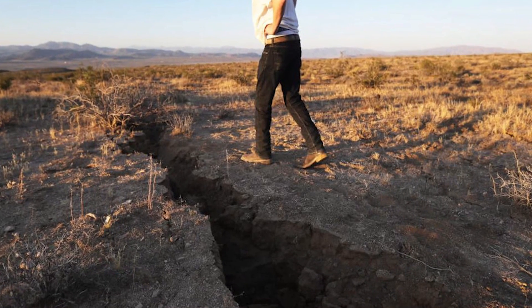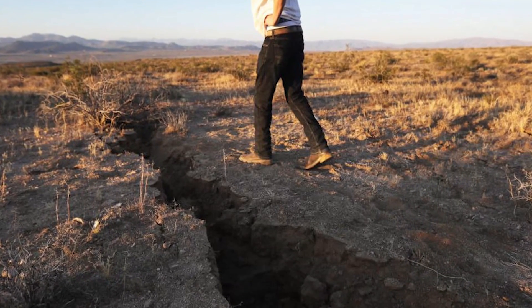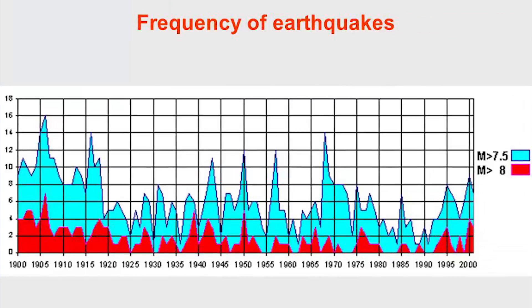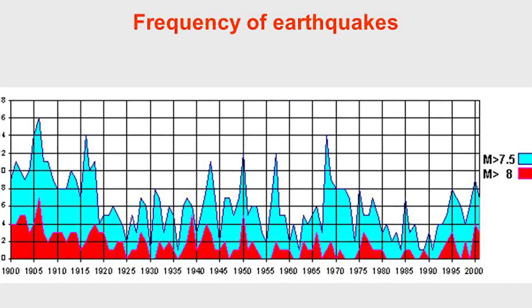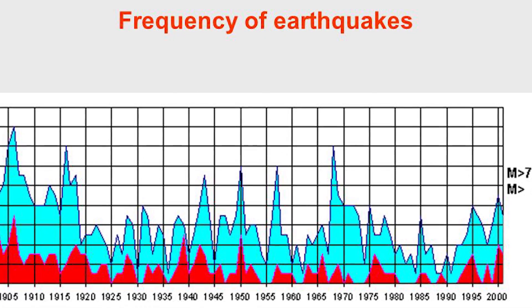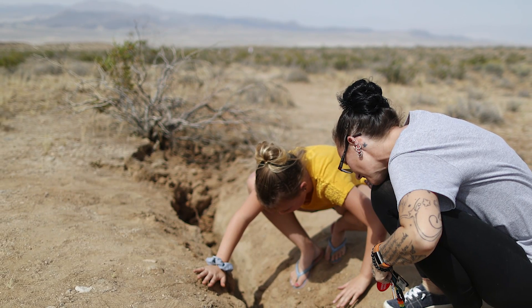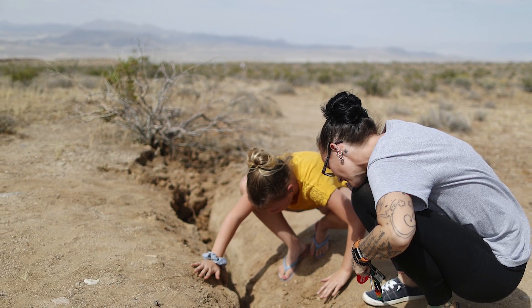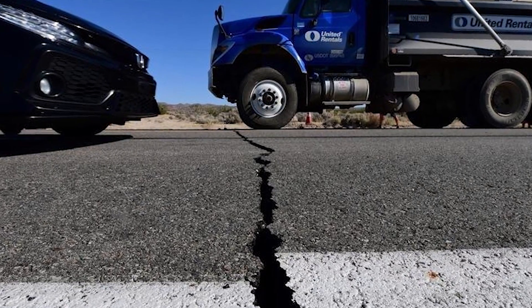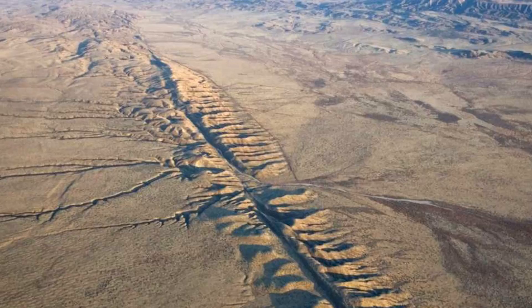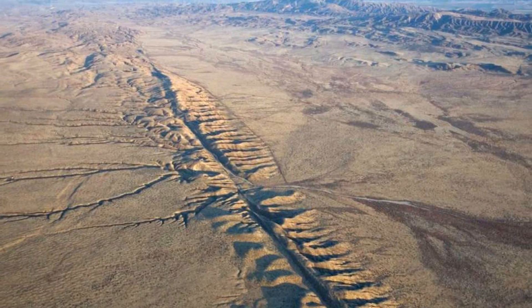Following the 6.4 magnitude earthquake that shook Southern California on the morning of July 4th, questions started arising as to when the fault could cause another earthquake. Research has discovered that the fault consistently produces a 6.0 magnitude earthquake approximately every 22 years. One study published in 2006 determined that the fault has reached a significant enough stress level for an earthquake of magnitude greater than 7.0 to occur, with the risk specifically in the Southern section of the fault.